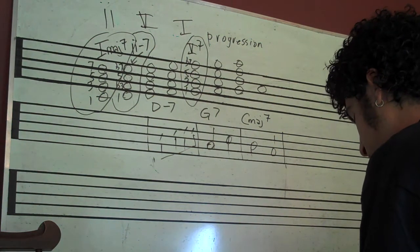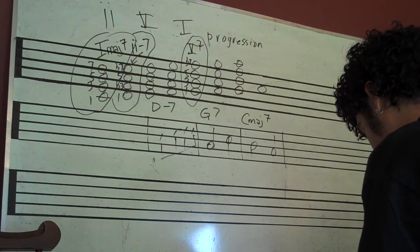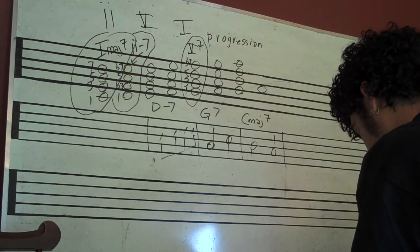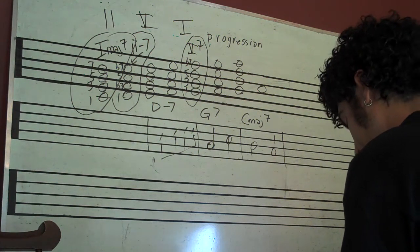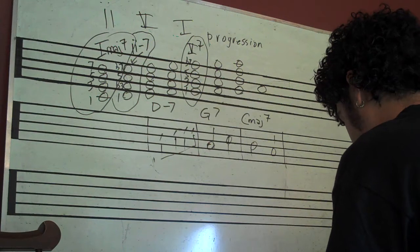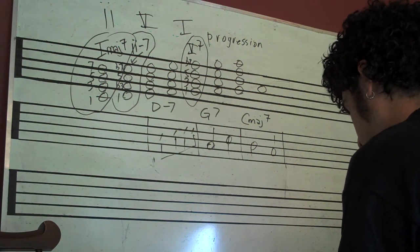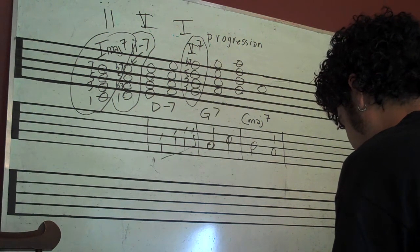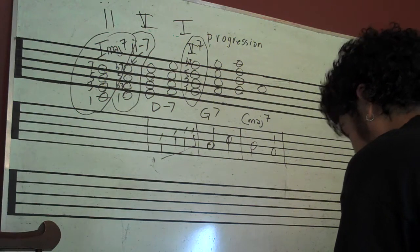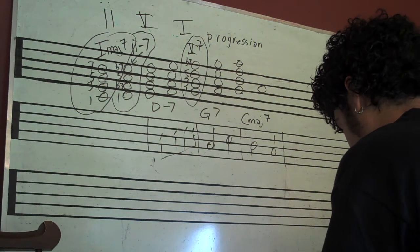That's D minor seven, to G dominant seven, to C major seven. So listen to that again. D minor, G dominant, and C major seven.